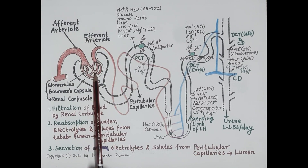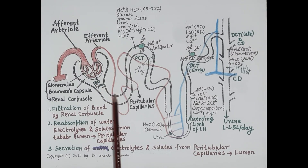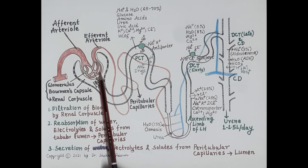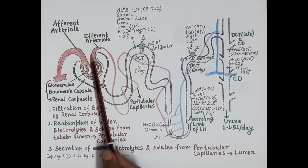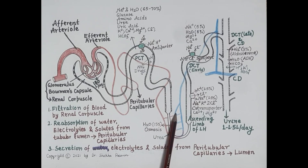The renal artery branches to produce the afferent arterioles, and these carry blood to the glomerulus. Components of blood like water, electrolytes such as sodium, potassium, calcium, magnesium, and nitrogenous waste products like urea and uric acid are filtered through the renal corpuscle and the filtrate passes into the tubular lumen. Non-filterable substances like blood cells and proteins such as albumin are carried away from the glomerulus by the efferent arterioles, which further branch to produce the peritubular capillaries that run parallel to and surround the entire nephron.